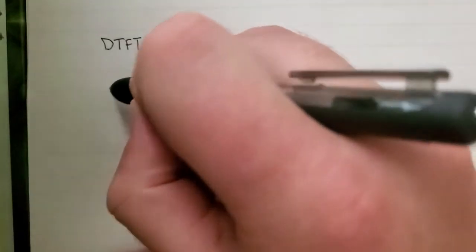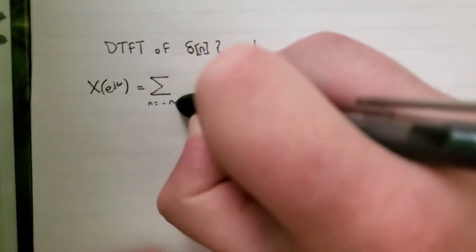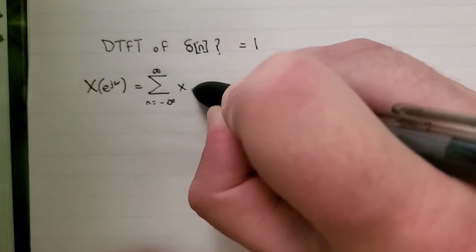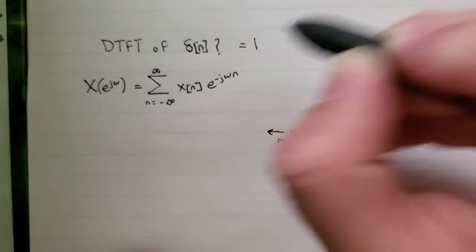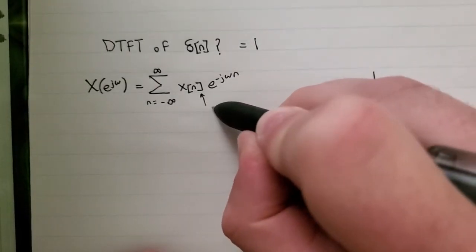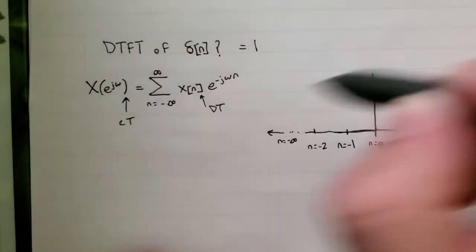So the equation for the DTFT is: capital X of e to the j omega is equal to the sum from n equals negative infinity to positive infinity of our signal times e to the negative j omega n. Note that these square brackets mean discrete time, whereas these curly brackets mean continuous time.